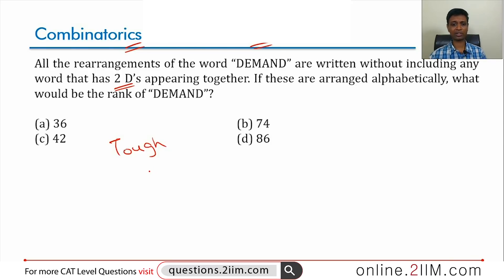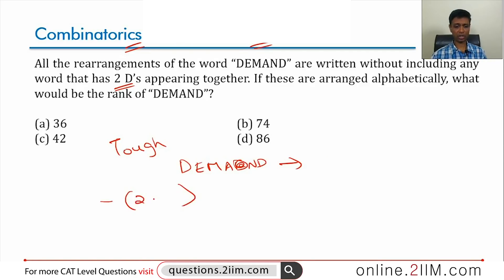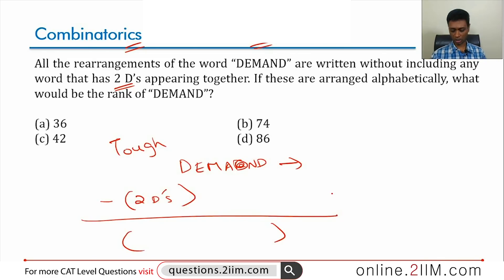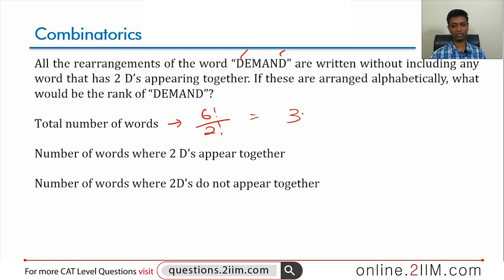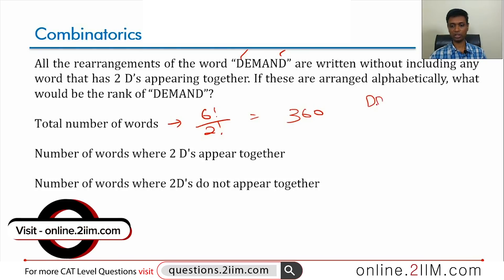First step: find how many rearrangements satisfy this condition. DEMAND — D, E, M, A, N, D — can be rearranged in many ways. From this, if we subtract all rearrangements where the two D's appear together, we get the number we are looking for. Total rearrangements of DEMAND: six factorial by two factorial, which is 360 words.